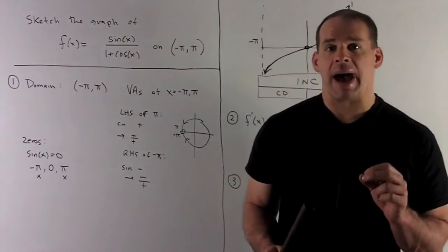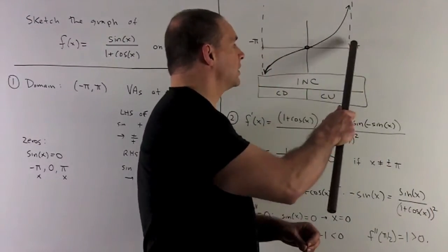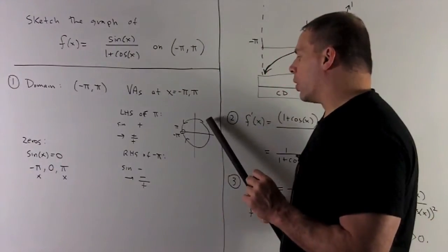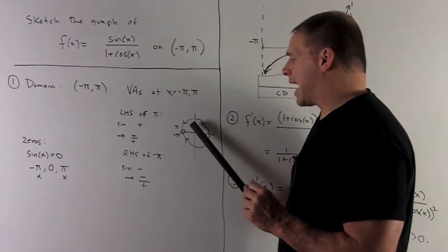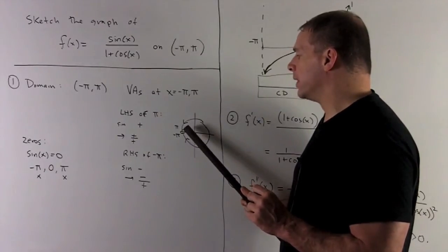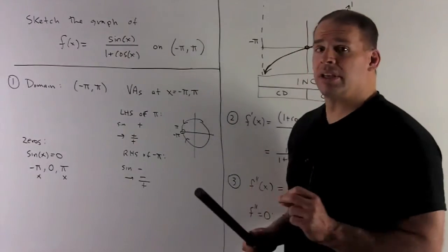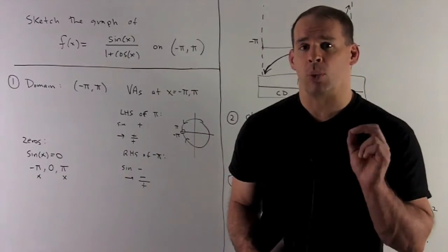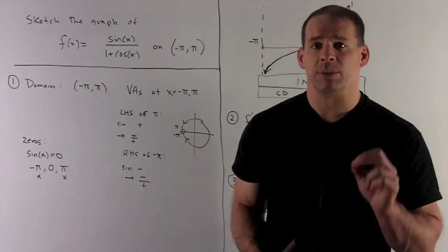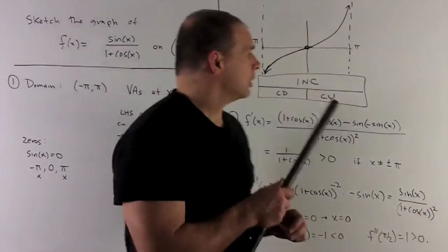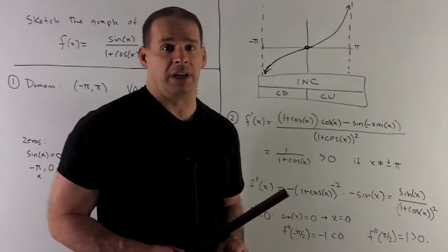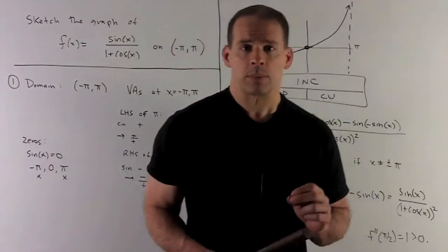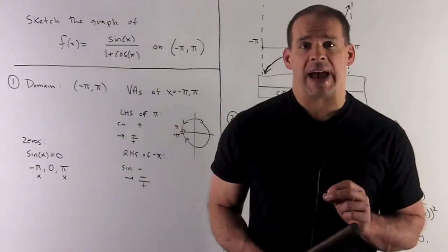For x = pi, we approach from the left, going from zero to pi along the top arc. Near pi we're in the second quadrant where sine of x is positive, and 1 + cos(x) is positive by the same reasoning. Positive over positive gives a positive, so when we get near pi our function goes off to plus infinity.